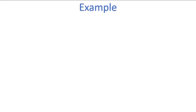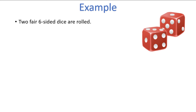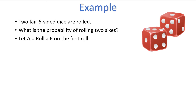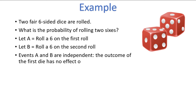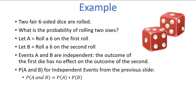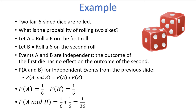Let's take a look at a few examples. Suppose you are rolling two fair six-sided dice, and you are interested in the probability of rolling two sixes. Let A equal rolling a 6 on the first die, and let B equal rolling a 6 on the second die. These two events are independent — the outcome of the first die has no effect on the outcome of the second die. Since there are six sides of the die and each outcome is equally likely, the probability of A is one-sixth and the probability of B is also one-sixth. So the probability of A and B is one-sixth times one-sixth, which equals 1 out of 36. There is a 1 out of 36 chance of rolling two sixes.